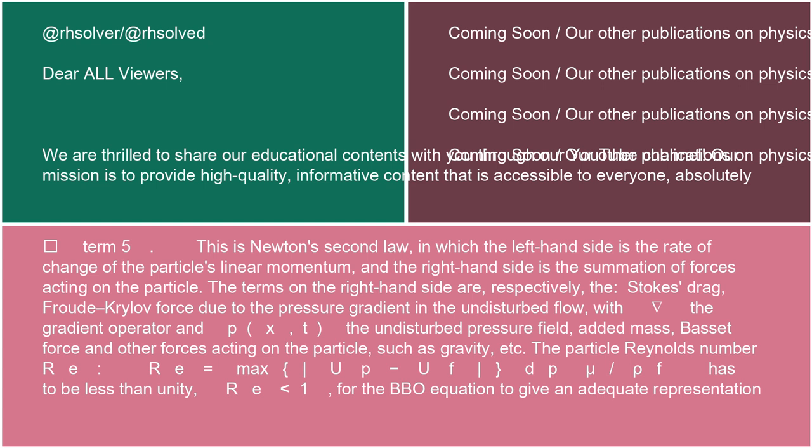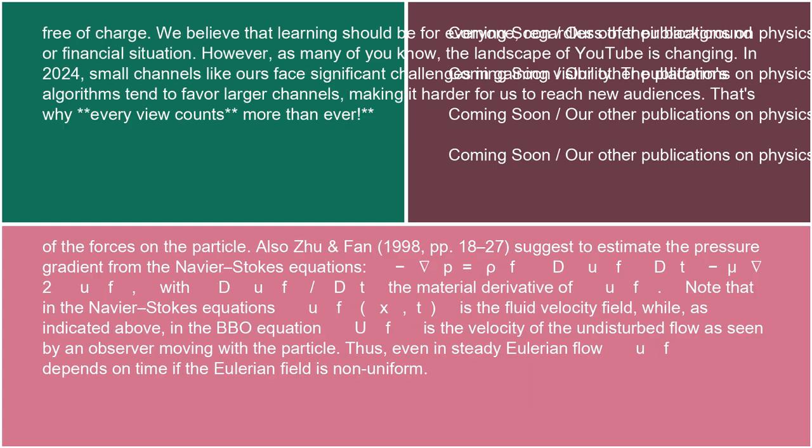The particle Reynolds number RE = |up − uf| dp / (μ/ρf) has to be less than unity (RE < 1) for the BBO equation to give an adequate representation of the forces on the particle.